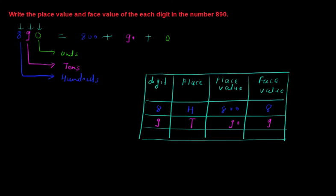The last digit is 0. Its place is units. So the place value automatically becomes 0, and the face value is also 0.